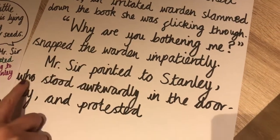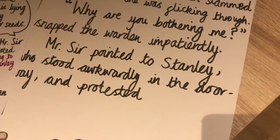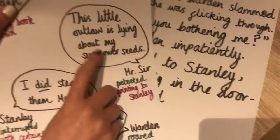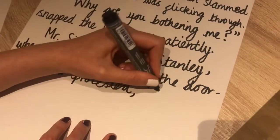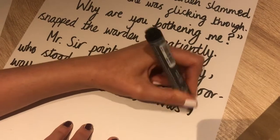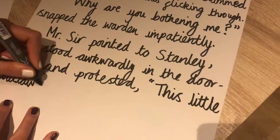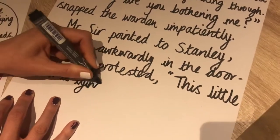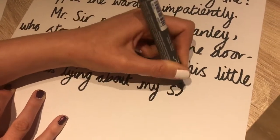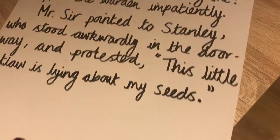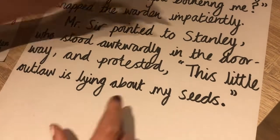All of this is a reporting clause — it's telling us who is speaking and it's coming before the speech. So Mr. Sir is about to speak; we need a comma, we need our inverted commas, and he says: 'And this little outlaw is lying about my seeds.' Full stop, close the inverted commas. Okay, now I have a reporting clause at the beginning of speech and a relative clause in there too.